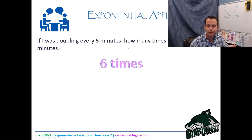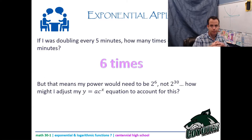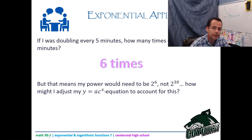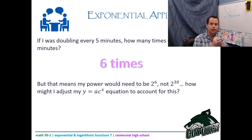If I just put the time value as my exponent, I'd get 2 to the 30 — but I want 2 to the 6. So I need to take the total time and divide it by the time it takes me to double. I took 30 divided by 5 — the period — to get the correct exponent of 6.